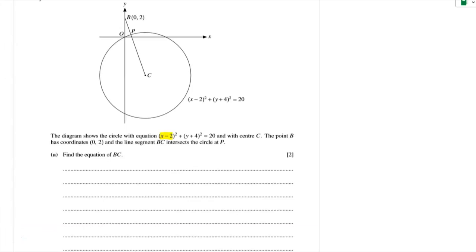They give us the equation of the circle, so we actually know the point. What x value makes x minus 2, 0? Well, that's 2. What y value makes y plus 4, 0? Well, that's negative 4. So the center is 2, negative 4. So all that we're finding here is the equation of a line between two points.